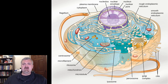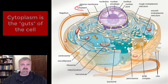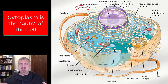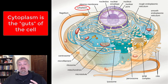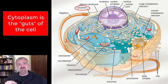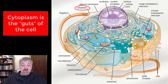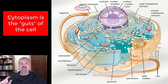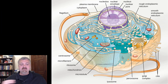Let's start with the cytoplasm. The cytoplasm is everything inside the cell, inside the plasma membrane except for what's in the nucleus. Really it's just the guts of the cell. The cytoplasm is the cytosol — the fluid portion of the cell — plus whatever organelles are swimming inside of it.